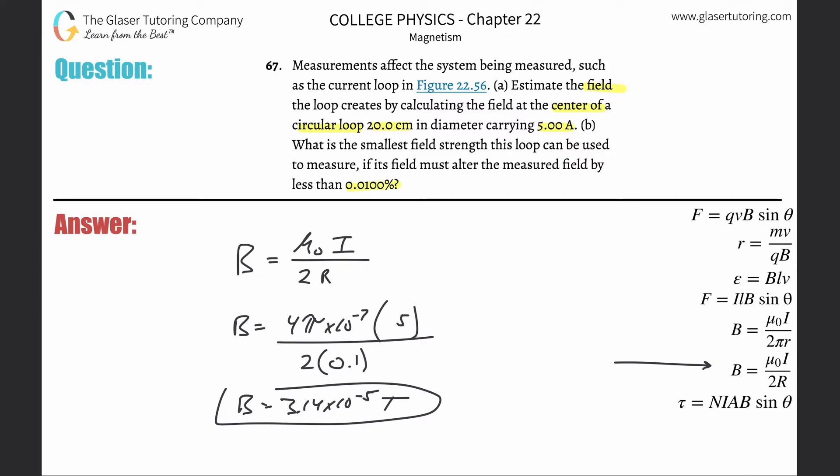Basically, we need to take this value that we found and divide it by the percentage. Remember, whenever you do a calculation with percent, you have to turn it into a decimal. You have to move this decimal two places to the left. Take the 3.14 times 10 to the minus 5 Tesla value you just found and divide it by 0.000100.